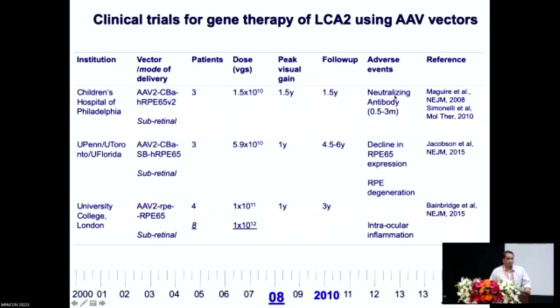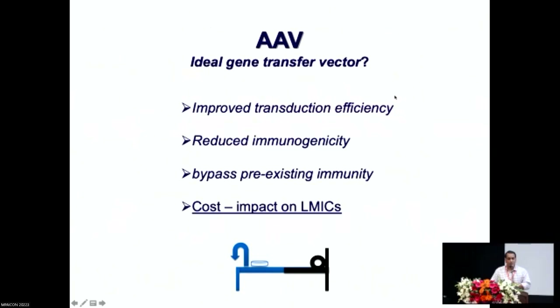What this means is that if you want a good gene therapy vector — whether for retinitis pigmentosa or hemophilia — first, you need to indigenously prepare these vectors. Second, they should have improved transduction across multiple intended target tissues. They should have reduced immunogenicity and, if possible, the ability to bypass pre-existing immunity. The reason I say this is that if we have 100 people in this room, close to 60 to 70 percent will be seropositive for AAV, meaning you cannot use a serotype against which you are seropositive as a mode of therapy. And of course, the cost itself is a major issue.